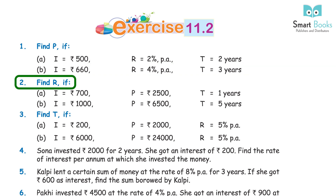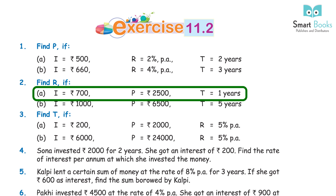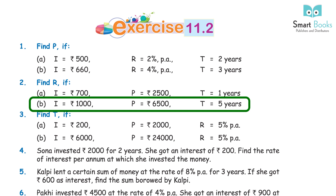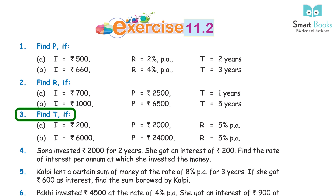Question 2: Find R. (A) I = Rs 700, P = Rs 2,500, T = 1 year. Answer: 28%. (B) I = Rs 1,000, P = Rs 6,500, T = 5 years. Answer: 3.1%.